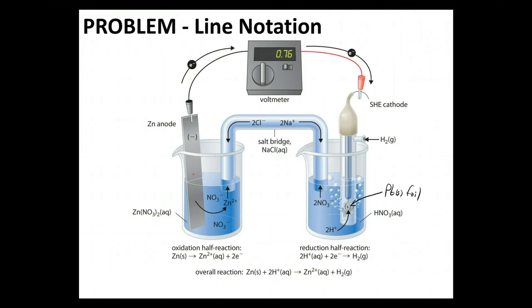So I want you to go through this cell that you see configured here, and I want you to give it a line notation.